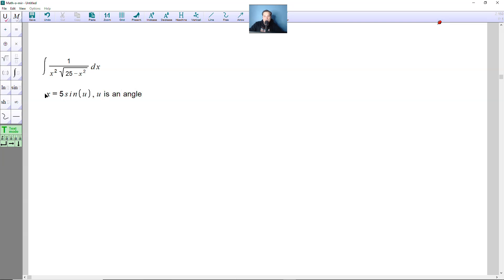I'm using that instead of theta because u is easier to type. Which means the following is true from there. The du, once you differentiate, would be equal to 5 cosine u du.